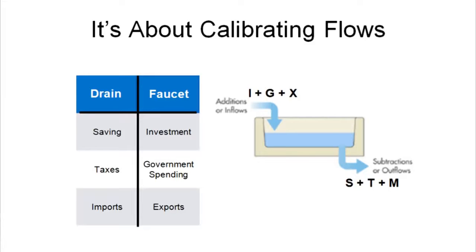The trick to running a healthy economy is recognizing that you've got a faucet and you've got a drain — injections that put water in the bathtub, and leakages that take water out. That bathtub is our GDP. What are these leakages that take water out of the tub and move us away from our goal? One is saving. Every dollar that we save and don't spend is a dollar that can't be captured by some business trying to sell its output, can't become part of its sales revenue, and ultimately part of its profit. Saving is a leakage — it goes out of the economy.